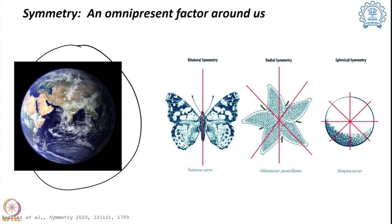What is symmetry? There are three examples I am showing. First is a butterfly. If you take a look, one part of its wing matches the other — it is naturally mimicking. We call this bilateral symmetry. We will talk a little bit more about that in the coming minutes.